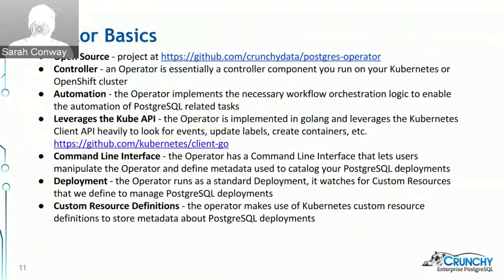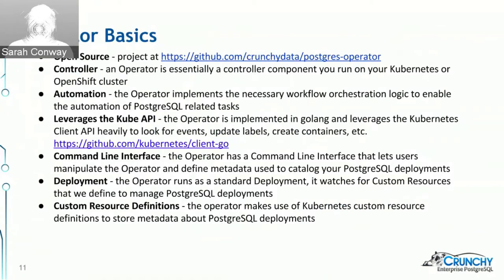The configured responses are basic Postgres operations. You can also use an operator to automate DBA workflows — automating manual tasks and building those automation layers into the operator itself. This particular operator is built in Cobra, which is a Golang library, and it uses the Kubernetes client API for Go, specifically the client-go open source project. This allows interaction with the Kubernetes API using customized code, including updating labels on containers, creating and deleting containers — everything is based on leveraging that client API.